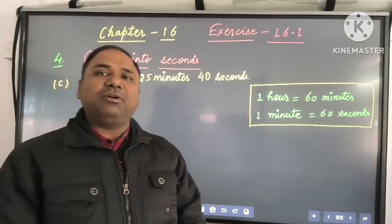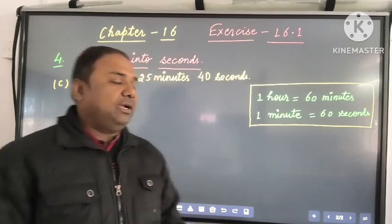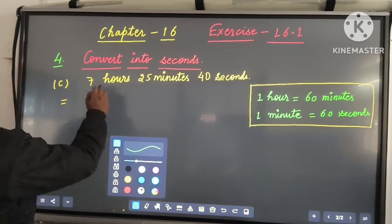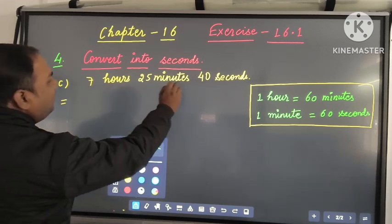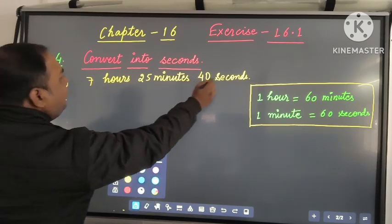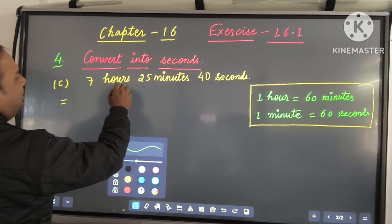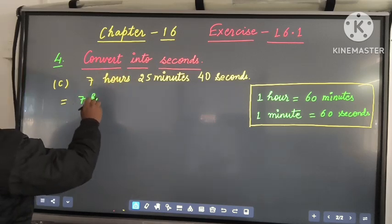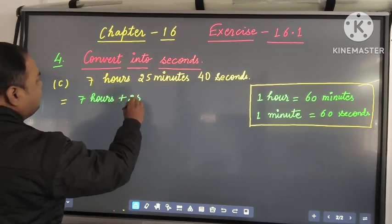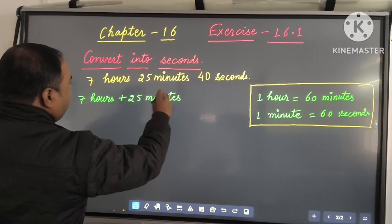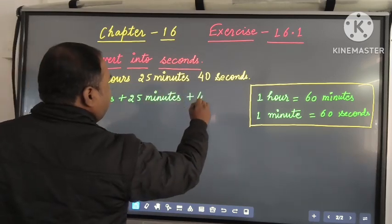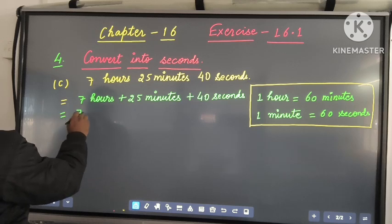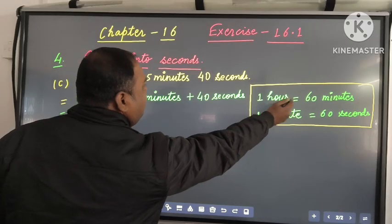Question number 4c is 7 hours 25 minutes and 40 seconds. If you see, it has hours, minutes, and seconds. The 40 seconds is already in seconds. We only have to convert the hours into minutes first, and then the minutes into seconds. So we will separate it: 7 hours 25 minutes plus 40 seconds.